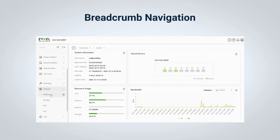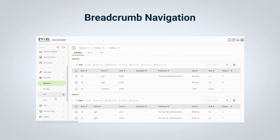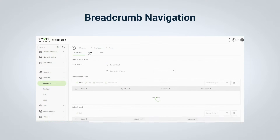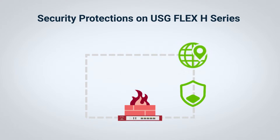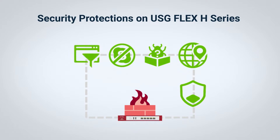The next user-friendly design is breadcrumb navigation, which helps users easily understand the location of each page, making it simpler to backtrack and explore related settings. These are the enhancements made to the new GUI design — and what about the security protection provided by the USG Flex H series?